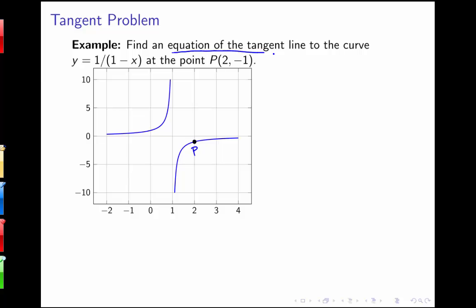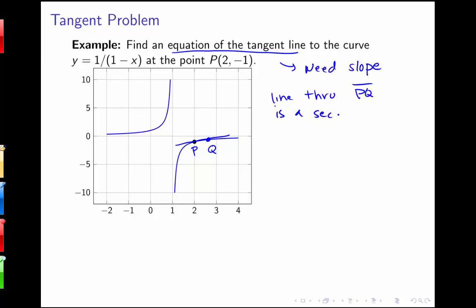We want to find the equation of the tangent line, so we need slope. I don't know how to find the slope just through p, but I do know how to find the slope through two points p and q. Just to review terminology: a line through just the point p would be our tangent line, while a line through points p and q would be a secant line. Our goal is to look at the slope of lines through p and q, where q gets closer and closer to p, which will help us approximate the slope of the tangent line through p.